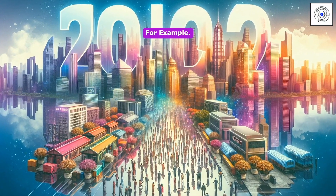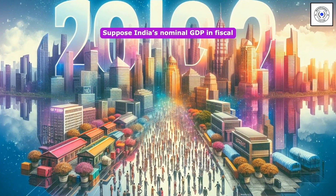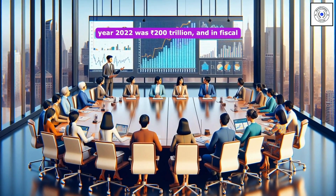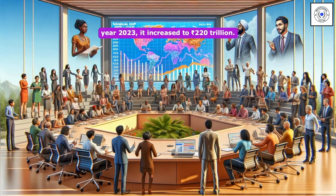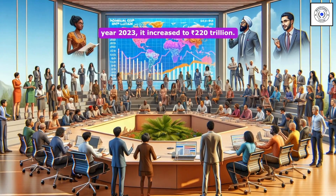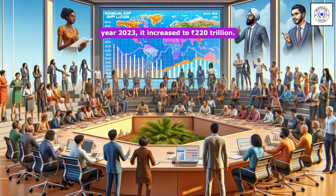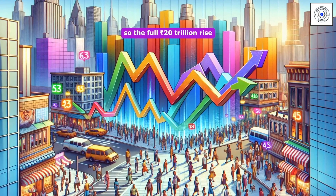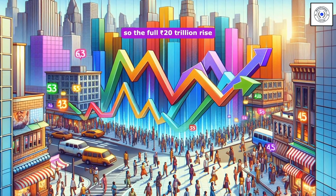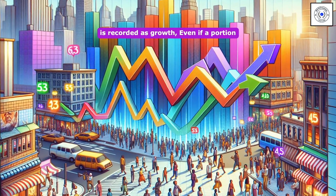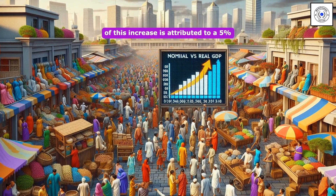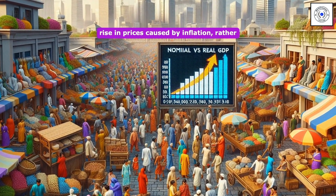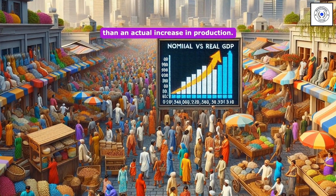For example, suppose India's nominal GDP in fiscal year 2022 was 200 trillion rupees, and in fiscal year 2023 it increased to 220 trillion rupees. Nominal GDP does not adjust for inflation, so the full 20 trillion rupees rise is recorded as growth, even if a portion of this increase is attributed to a 5% rise in prices caused by inflation, rather than an actual increase in production.